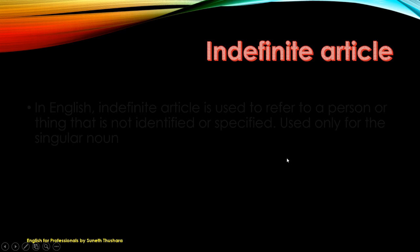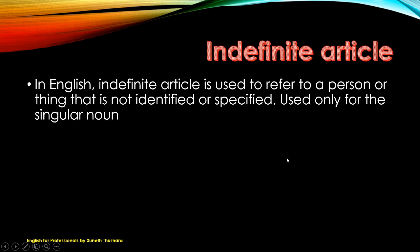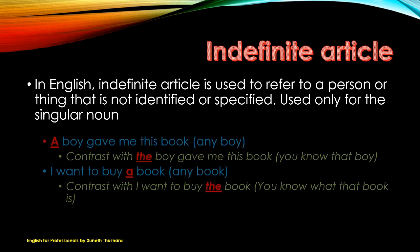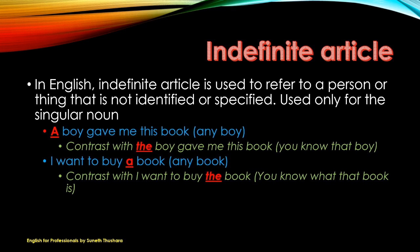So what is this indefinite article? In English, the indefinite article is used to refer to a person or thing that is not identified or specified. It is used only for the singular noun. For example, 'A boy gave me this book' — this can be any boy.